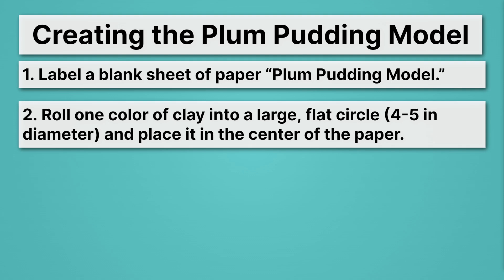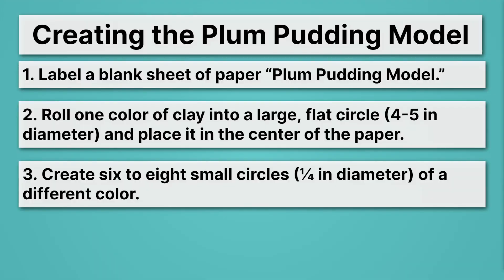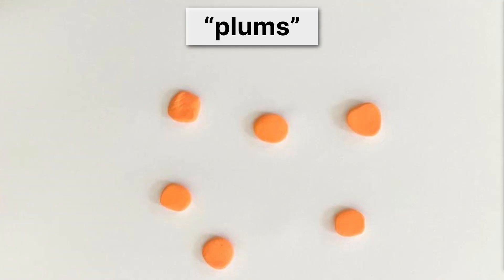I've given you an example here of what that looks like. Just a nice blue glob of clay that's flat and in a circle. This is the pudding of our plum pudding model. Next, we're going to create six to eight small circles, one fourth inch in diameter, of a different color. These will represent our plums, or our electrons.